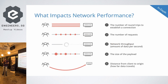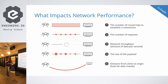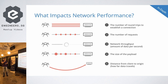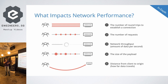So what exactly are we talking about when we say mobile applications are slow — why does this happen? It can happen for a few reasons: the number of round trips required to establish a data connection, the number of requests you're sending through APIs or any other source, the network throughput — the amount of data per second — and also the size of the payload.